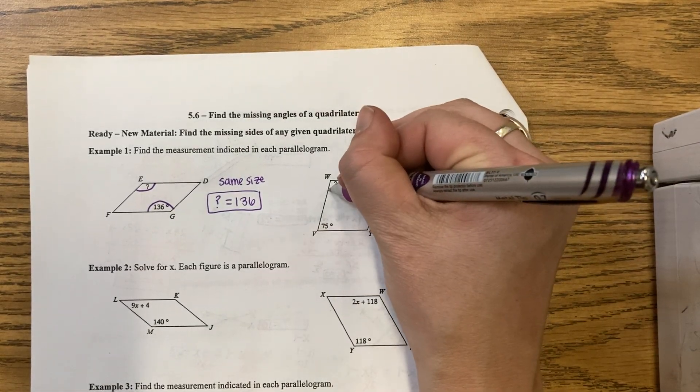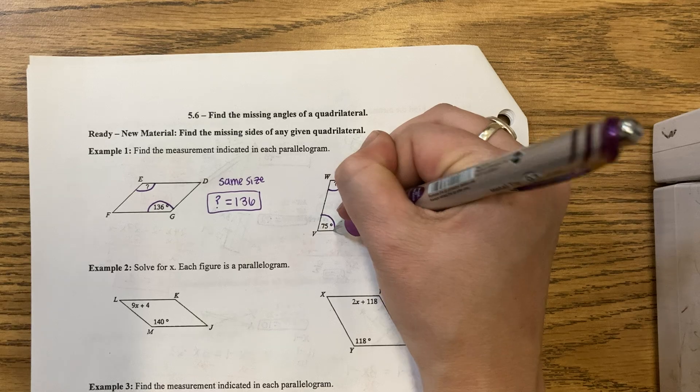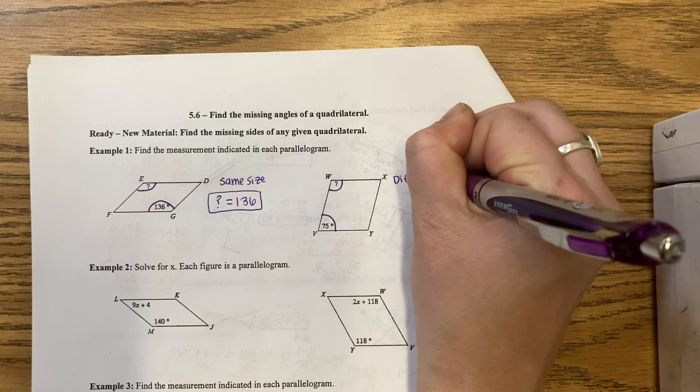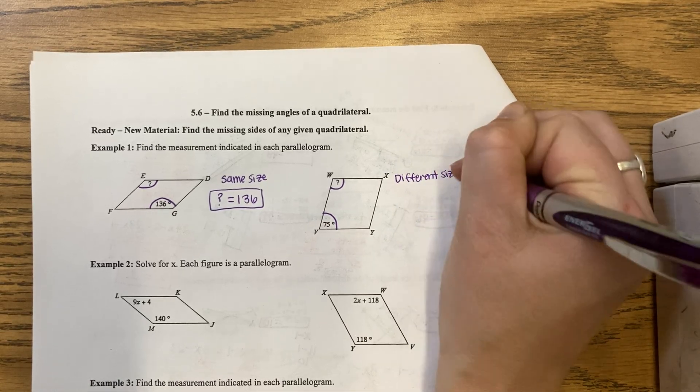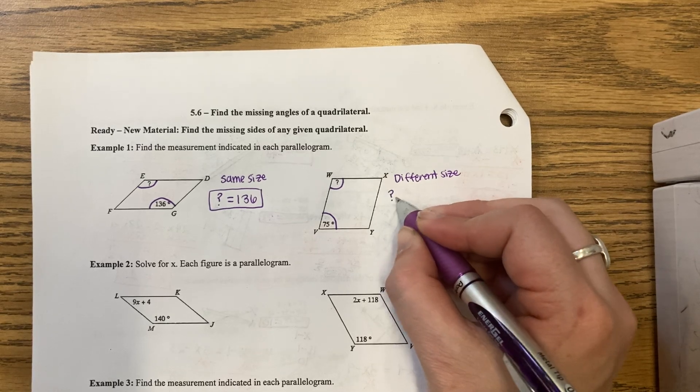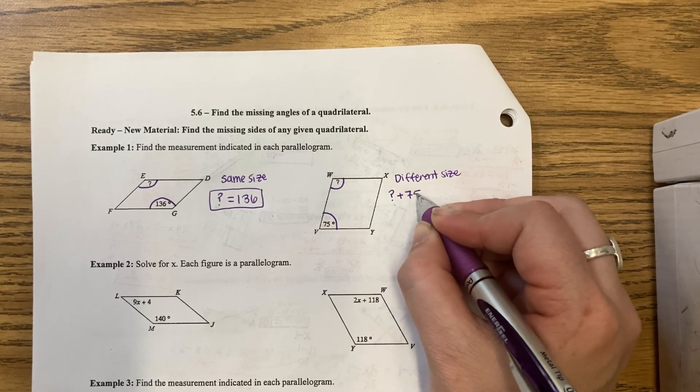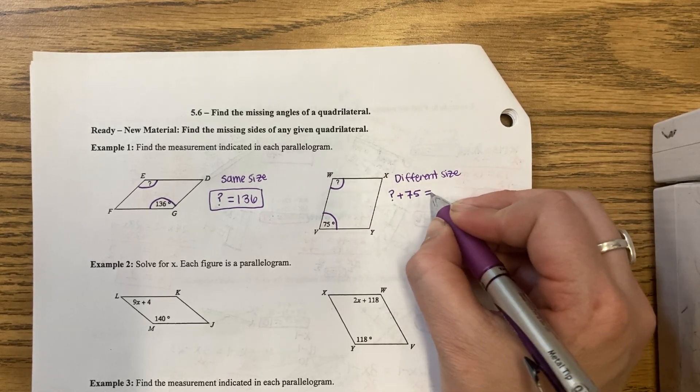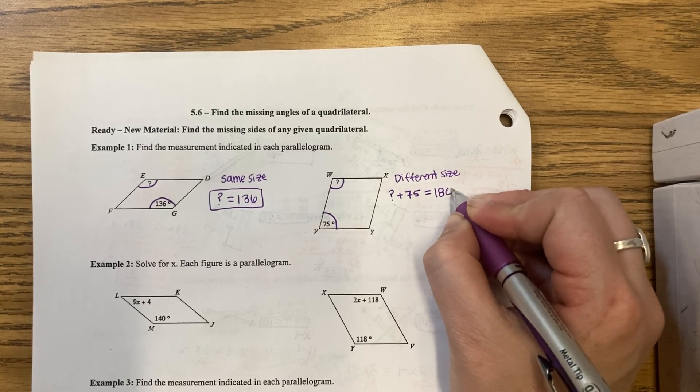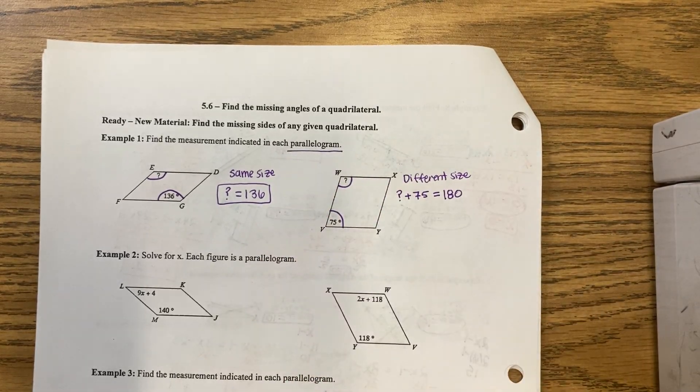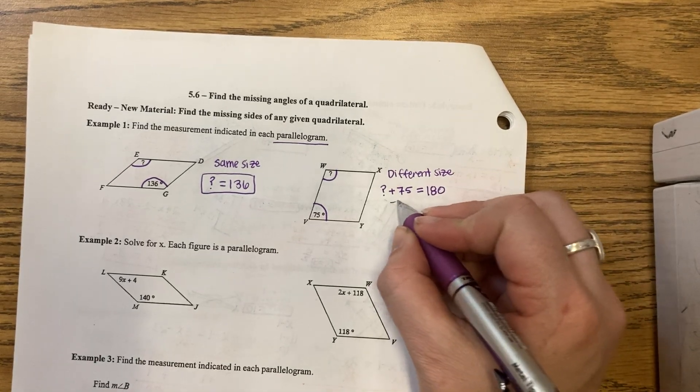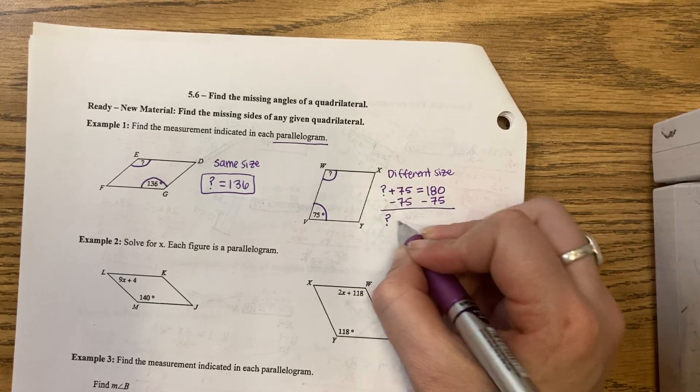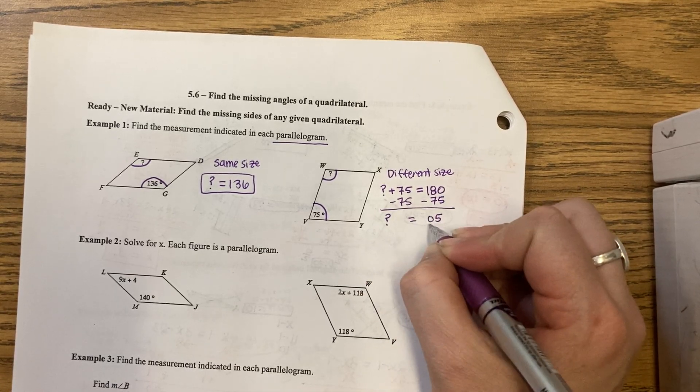For question W, angle W and angle V are different sized angles. I'm going to say that they add up, not to a full 360, but I only have two of the angles. So I'm going to say they equal 180 for a parallelogram. Minus the 75, that gives us 105.